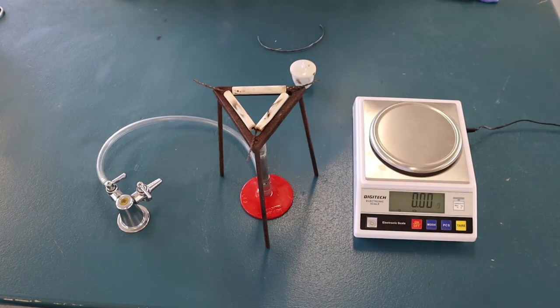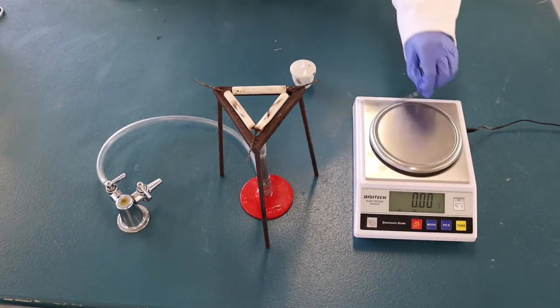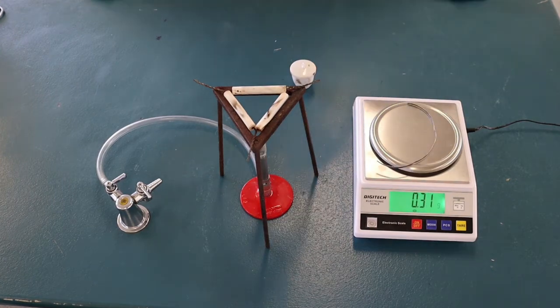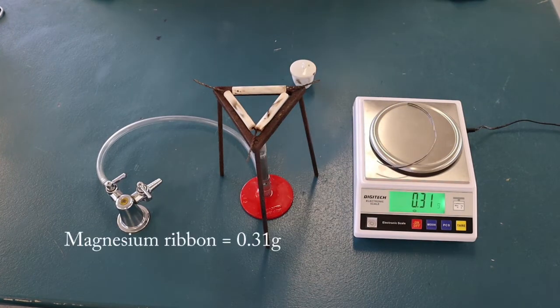Weigh the magnesium ribbon on the electronic balance. The magnesium ribbon weighs 0.31 grams.